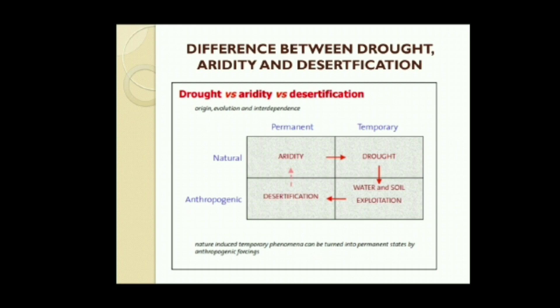Before we go into the in-depth understanding of drought, it is important to understand the difference between drought, aridity, and desertification, which can be well understood through the figure shown in the slide. Firstly, we will try to understand the meaning of these three terms. Remember, drought is a temporary condition which results in the reduction of water resource availability.